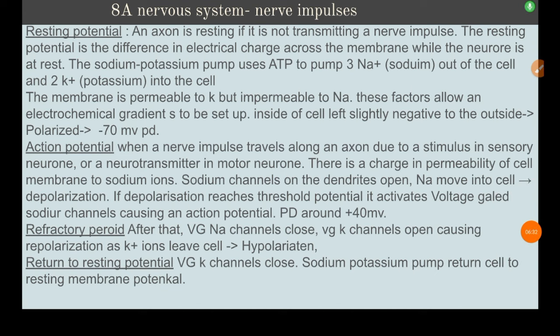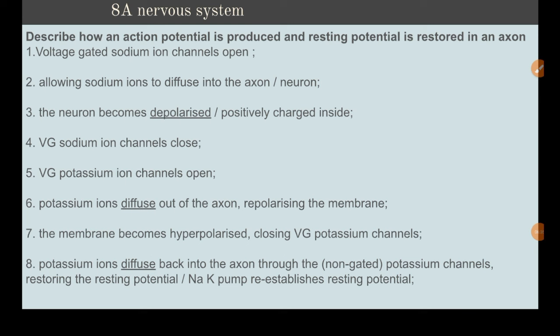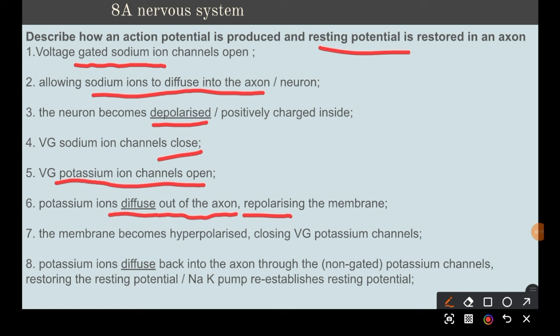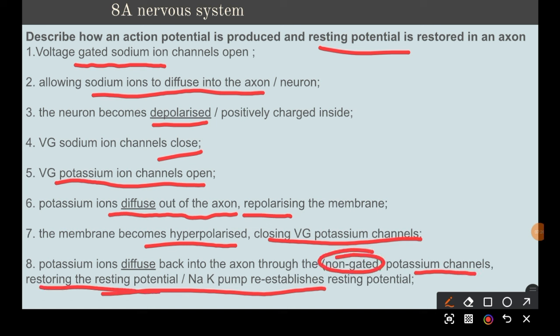Here is a past paper question asking how an action potential is produced and the resting potential is then restored. The depolarization is initiated by neurotransmitters or, for sensory neurons, by a stimulus: voltage-gated sodium channels open, sodium ions diffuse into the axon, and it becomes depolarized. Then voltage-gated potassium channels open, potassium ions diffuse out, repolarizing the membrane. The membrane becomes hyperpolarized, closing voltage-gated potassium channels. Potassium then diffuses back in through non-gated channels, restoring the resting potential, aided by the Na-K pump.